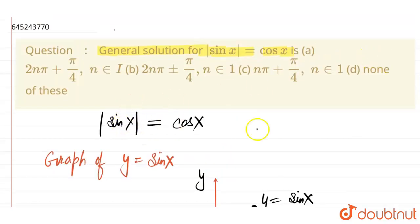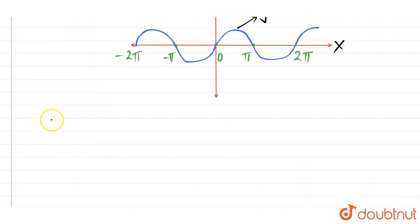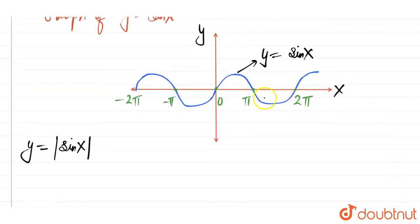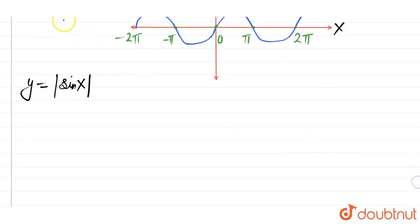Now we need to draw the graph of mod of sin x. So what we will do here. y equal to mod of sin x graph. If you see here, between π and 2π, the value is negative. So when we take mod, this would go up like this. So graph would be same. Just the negative part would go up. So it would like this.